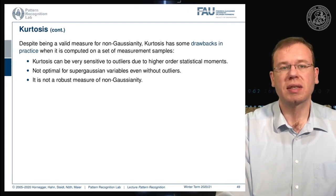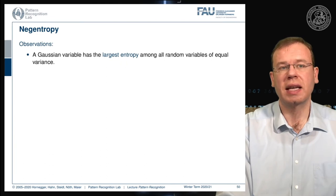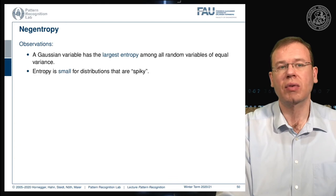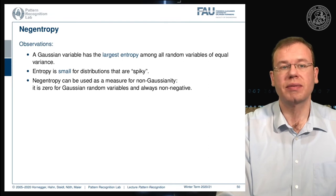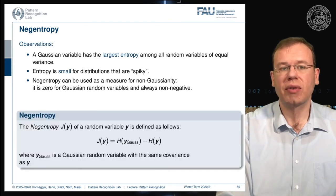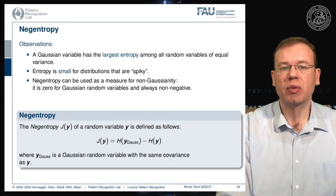The next measure is negentropy. A Gaussian variable has the largest entropy among all variables of equal variance. Entropy is essentially a measure for distributions that are spiky, so negentropy can be used as a measure of non-Gaussianity. It is zero for Gaussian random variables and always non-negative. Negentropy is defined as the difference between the entropy of a Gaussian with the same covariance and the entropy of the distribution under consideration.